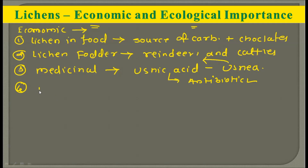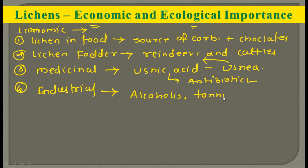The fourth application is industrial application. In industrial applications, lichens can be used for the production of alcohols, tannins, and dyes. By using lichens one can produce alcohols, tannins, or dyes of different colors.